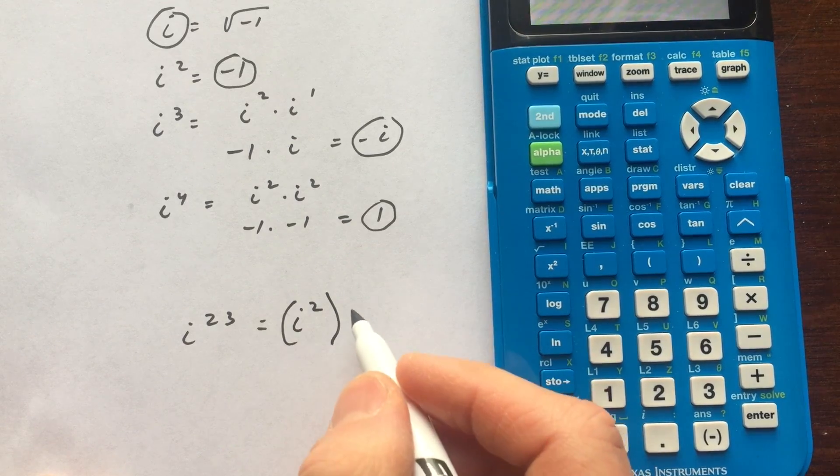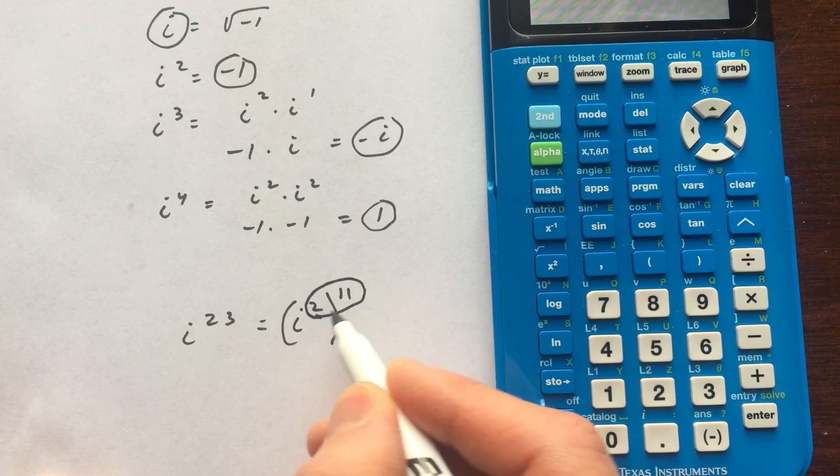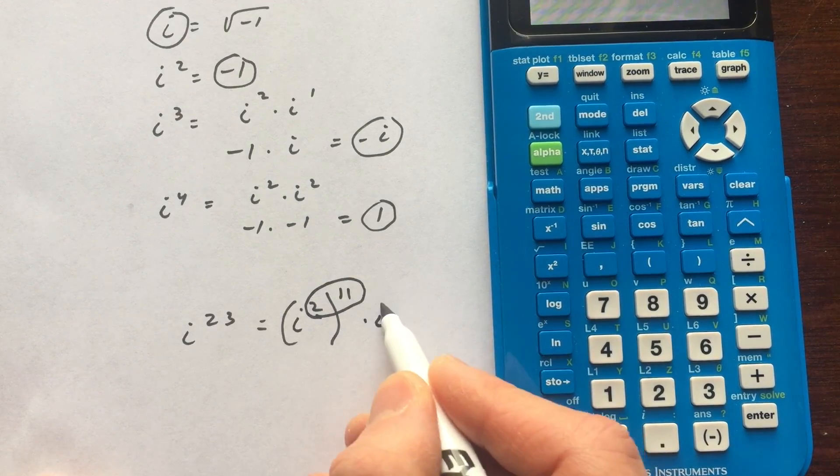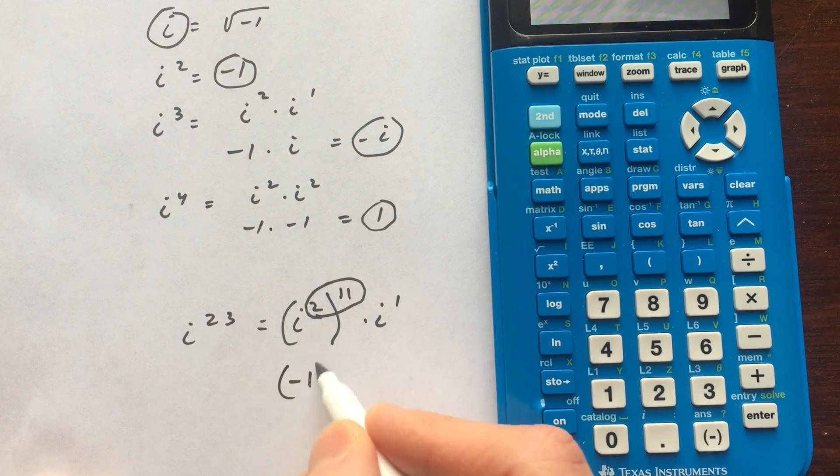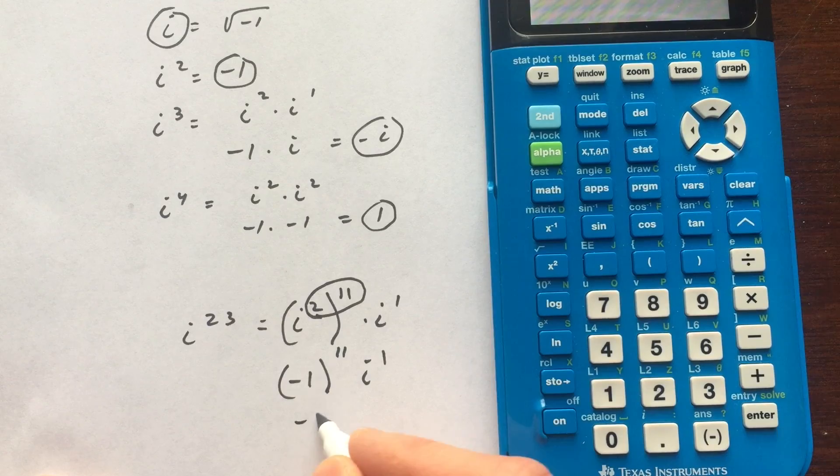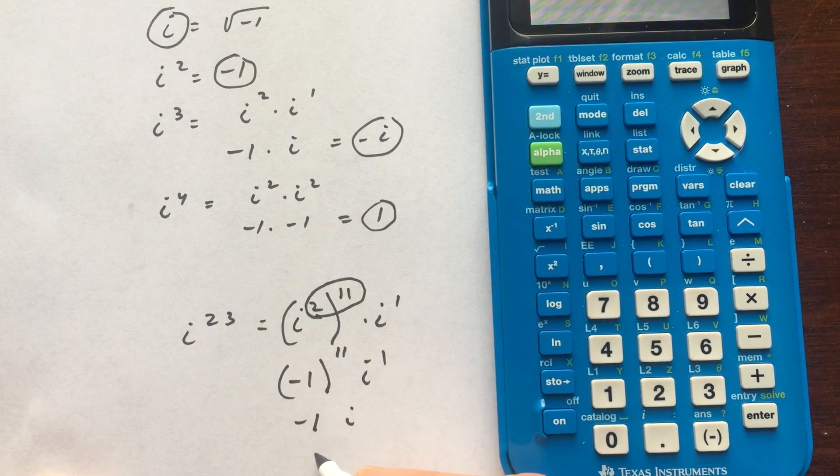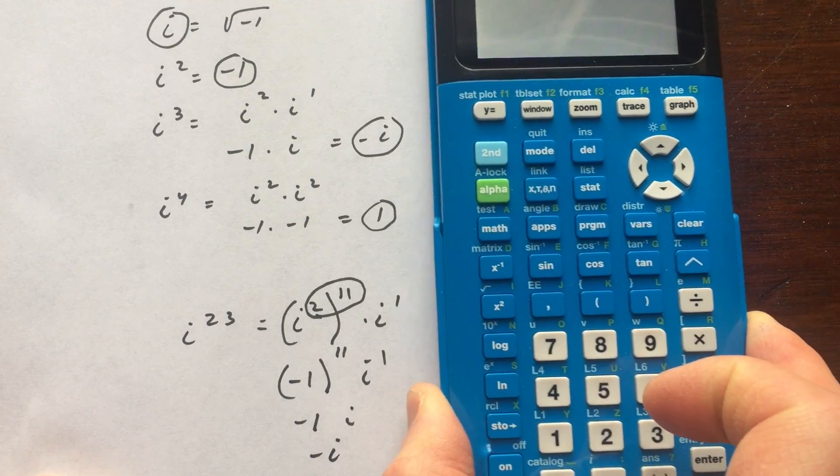One way to do it is i squared to the 11th power. So you power to power, you multiply. That's i to the 22nd times one more i. That gives you 23 i's, right? But i squared we know is negative 1. Negative 1 to an odd power is a negative. And the negative 1 times i gives us negative i. So the answer we should get for i to the 23rd is negative i.